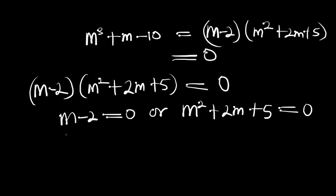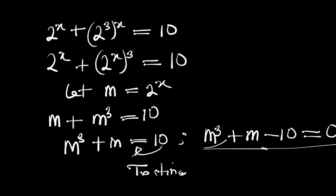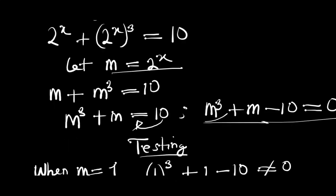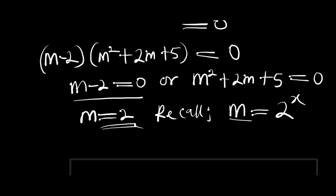For the first equation, m - 2 = 0 gives m = 2. Recall that m = 2^x, so 2^x = 2, which is 2^1. Comparing the exponents, we get x = 1. This is one of the solutions for x.